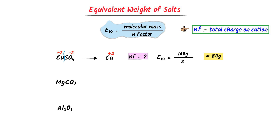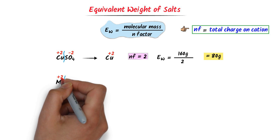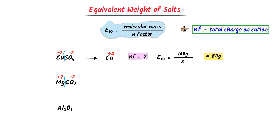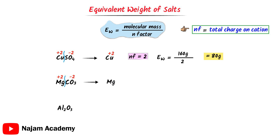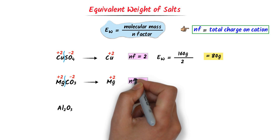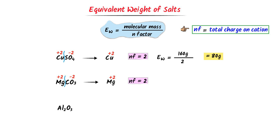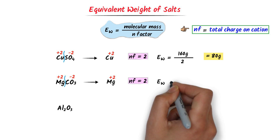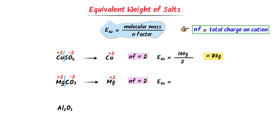In case of magnesium carbonate, I break it into two parts. The cationic part is magnesium and it carries a positive 2 charge. The N factor is 2. Equivalent weight is equal to 84 gram upon 2. I get 42 gram.